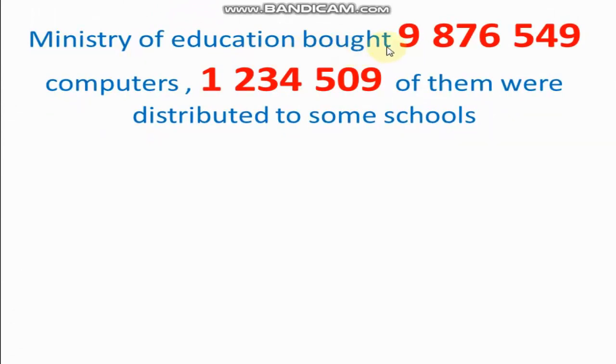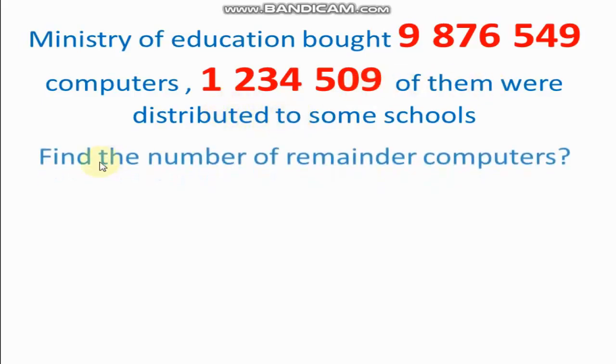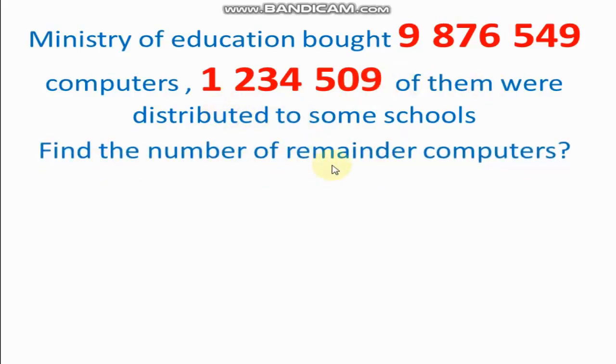The Ministry of Education bought 9,876,549 computers. 1,234,509 of them were distributed to some schools. Find the number of remainder. Remainder here means subtraction or minus.